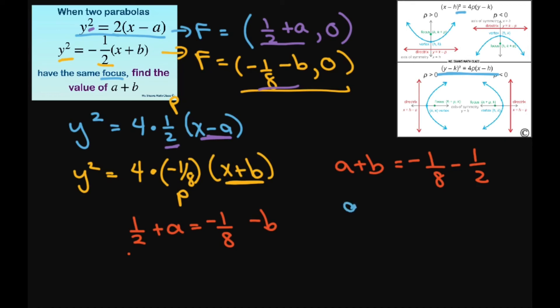This is going to give you a plus b equals negative five-eighths. So if you make this an eight, this has to be a four. And that's it. Thank you, have a nice day, bye bye.